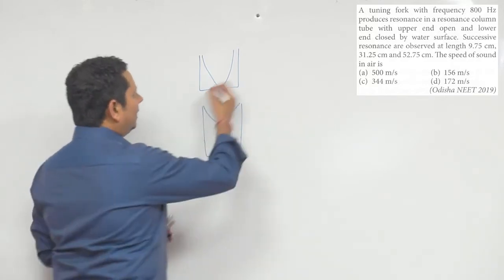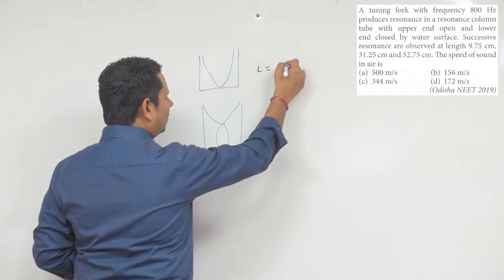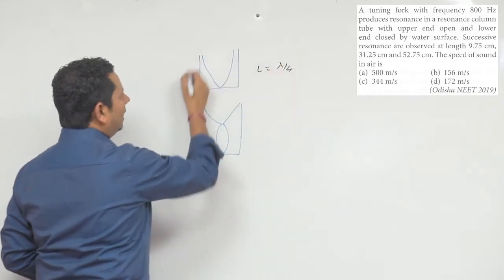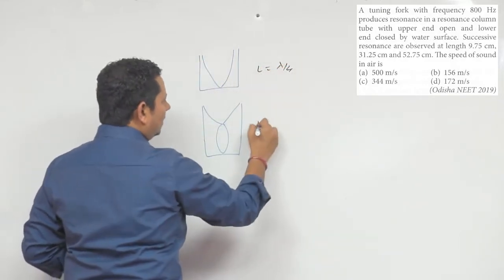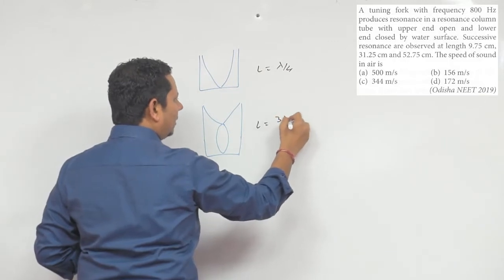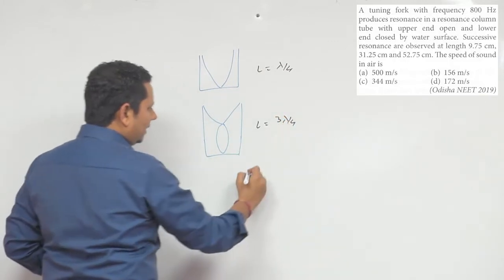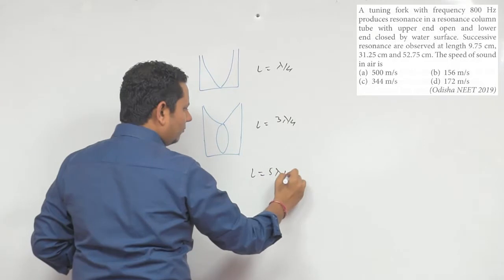Notice that this is equal to lambda by 4, this is equal to lambda by 4, this is equal to lambda by 4. Similarly, the other case is equal to 5 lambda by 4.